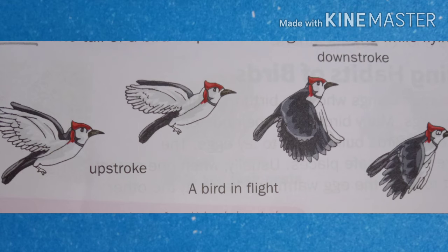A bird has wings that help it to fly. The wings are attached to the body with the help of very strong muscles. In order to fly, birds move their wings in two types of movements.